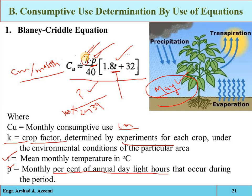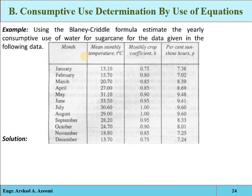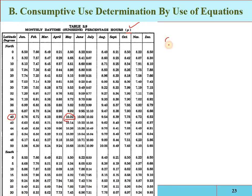Now, a simple example: using the Blaney-Criddle equation, estimate the yearly consumptive use of water for sugarcane. Sugarcane is a perennial crop — it requires irrigation throughout the year. The general Blaney-Criddle equation is: CU = k × (P/40) × (1.8T + 32), where temperature T is in degrees Celsius, P is in percentage, and k is the crop factor. This gives consumptive use for one specific month.